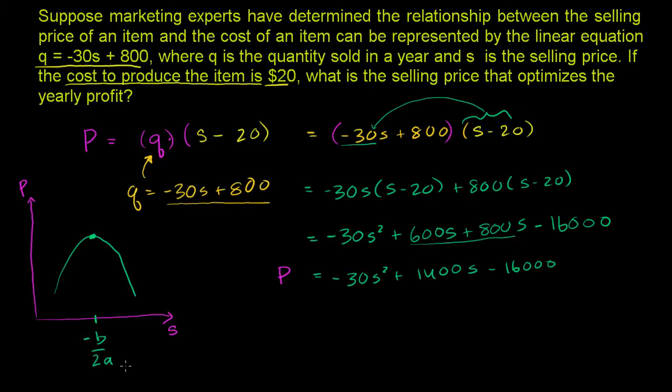And if we want to figure out what negative b over 2a is, we just take the, this is the b right over here. So it's negative b, so it's negative 1,400 over 2a, over 2 times negative 30, which is equal to negative 1,400 over negative 60. Negatives cancel out. We could divide the numerator and the denominator by 10. So this is the same thing as 140 over 6. We can divide the numerator and denominator by 2. And you get 70 over 3.